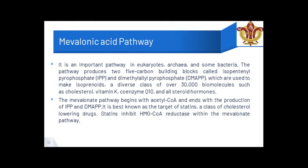The pathway produces two five-carbon building blocks: isopentenyl pyrophosphate (IPP) and dimethylallyl pyrophosphate (DMAPP). These combine to give different biomolecules such as cholesterol, vitamin A, coenzyme Q10, and all steroid hormones. The mevalonic acid pathway begins with acetyl-coenzyme A and ends with the production of IPP and DMAPP. It is best known as a target of statins — drugs which lower blood cholesterol levels — by inhibiting HMG-CoA reductase.